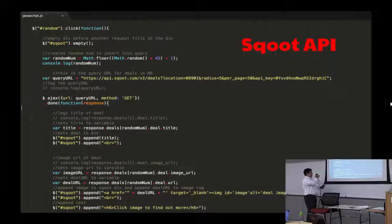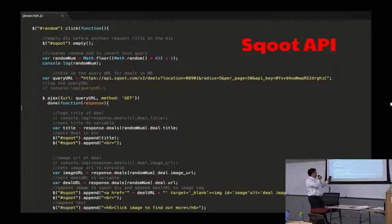And here we also save the image URL that's returned in the JSON object to an image URL variable. We do the same for the deal URL. And then we append the image to that div. And we point the image at the deal URL so that when you click the image, you get taken to the page with the full information.